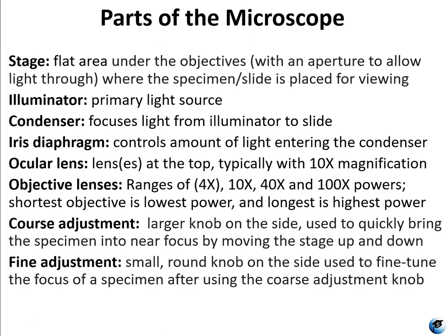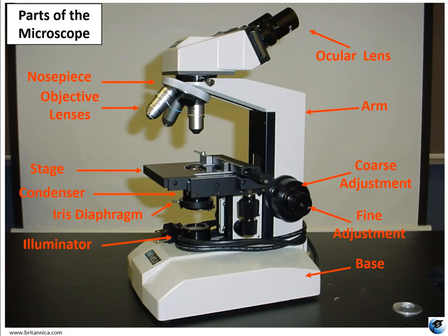You will need to know the parts of the microscope. The main ones are going to be your stage, illuminator, condenser, iris, ocular lens, objective lens, and your course and fine adjustment knobs. In class your instructor will demonstrate where all of these parts are located on the scope — the scopes you'll be using throughout the semester. Be sure that you can identify all of these parts, know how to properly use them, and we'll discuss in class how to properly care for the microscopes.